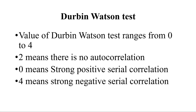The Durbin-Watson test result ranges from 0 to 4, and 2 means there is no autocorrelation. If it's closer to 0, that means there is strong positive serial correlation. If the result is close to 4, that means there is strong negative serial correlation. A value greater than 2 means negative serial correlation, and a value less than 2 means positive serial correlation.